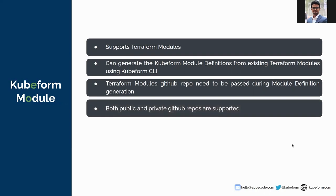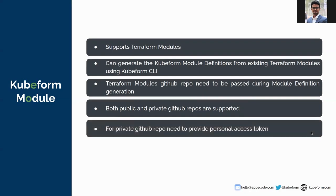QFarm supports both public and private repositories for generating QFarm module definitions. You can give your private repositories as well as public repositories where you define your Terraform modules. For private repositories, you need to provide your personal access token for that repository, which will be stored in a Kubernetes secret that is also generated by the QFarm CLI.